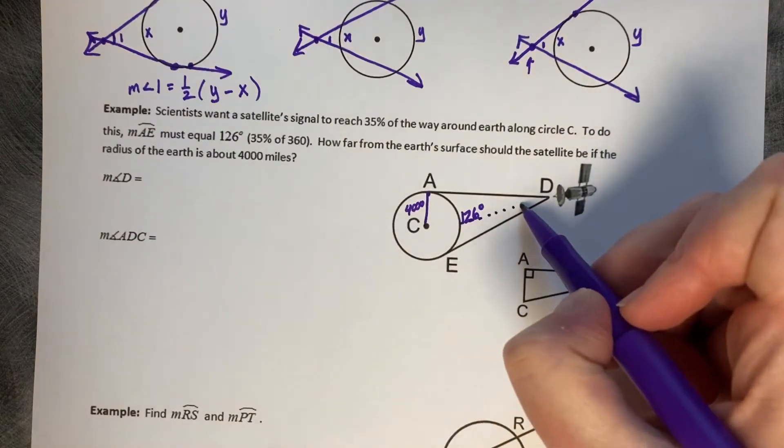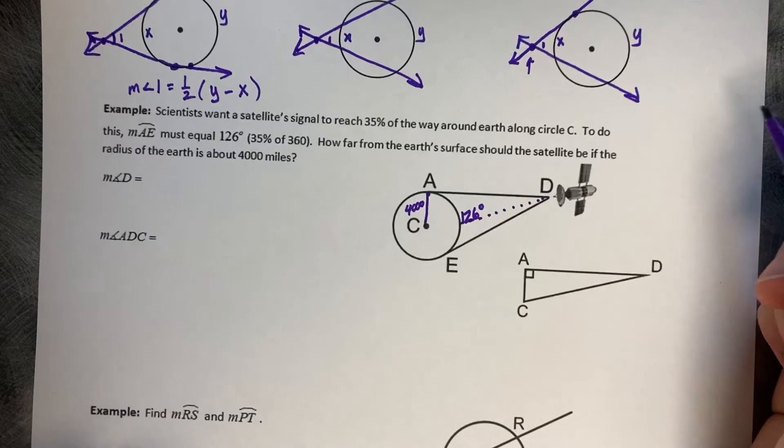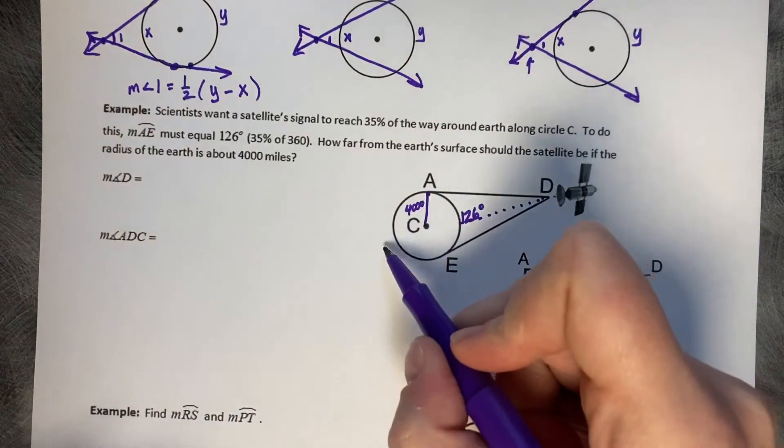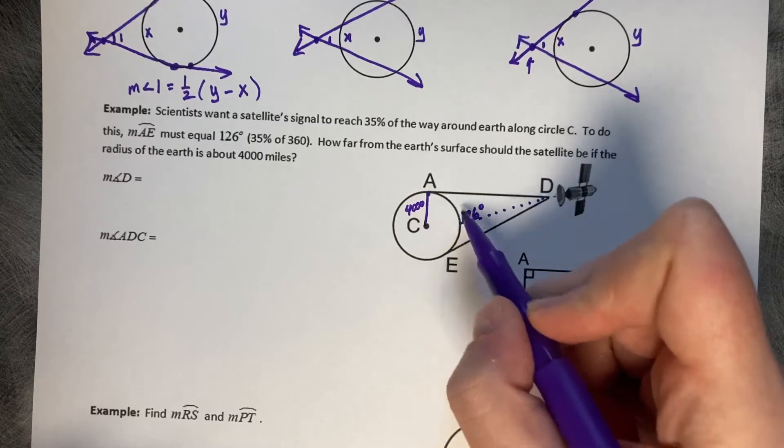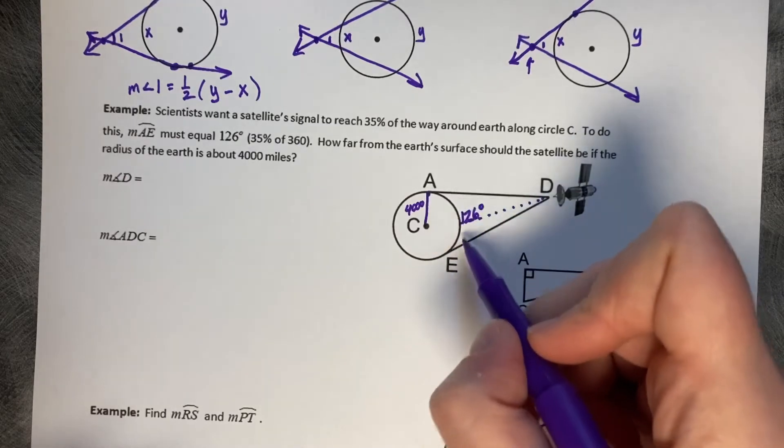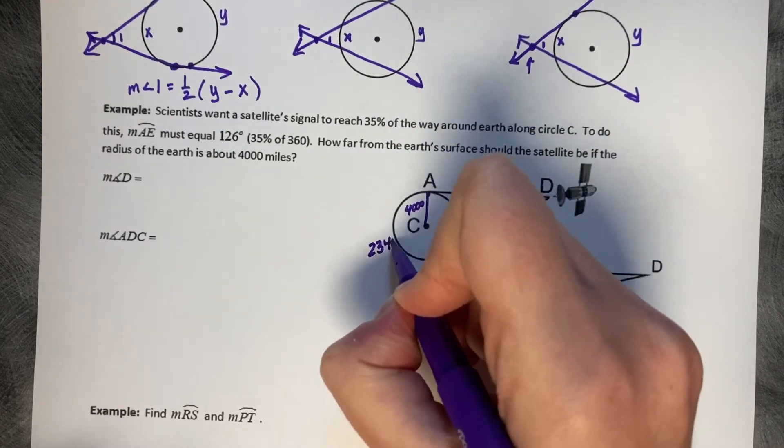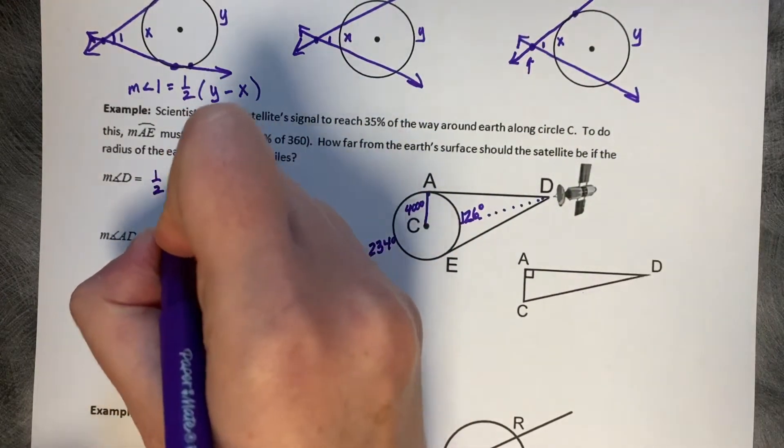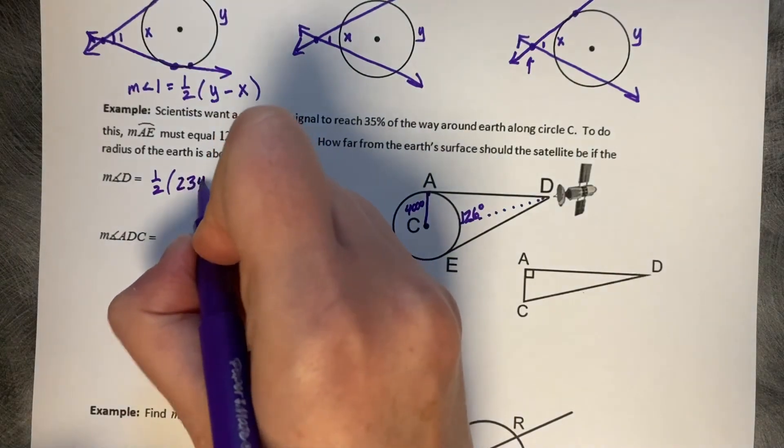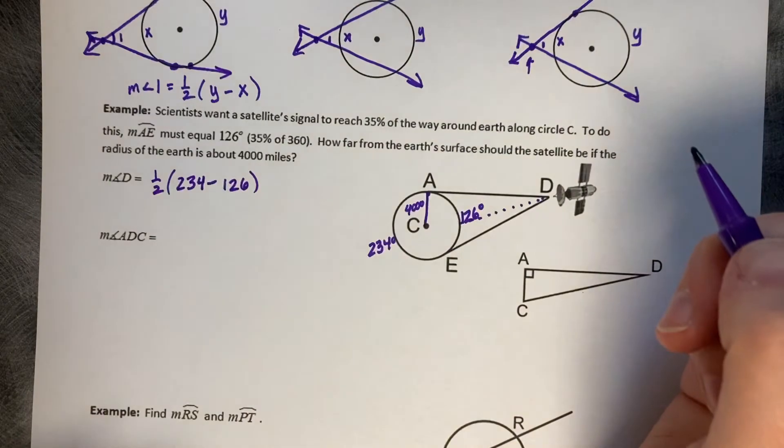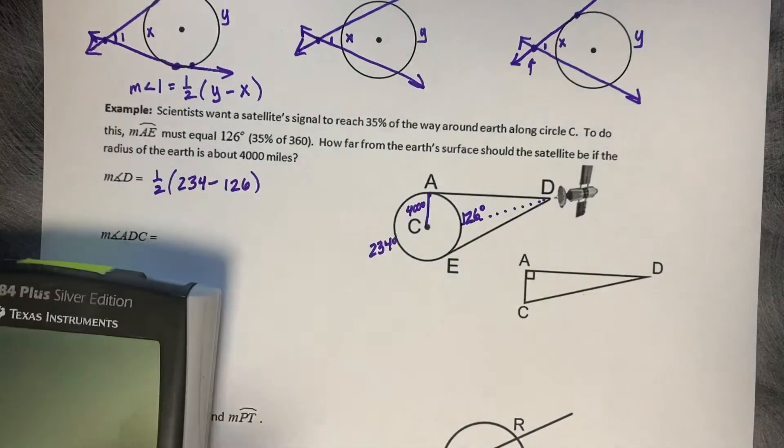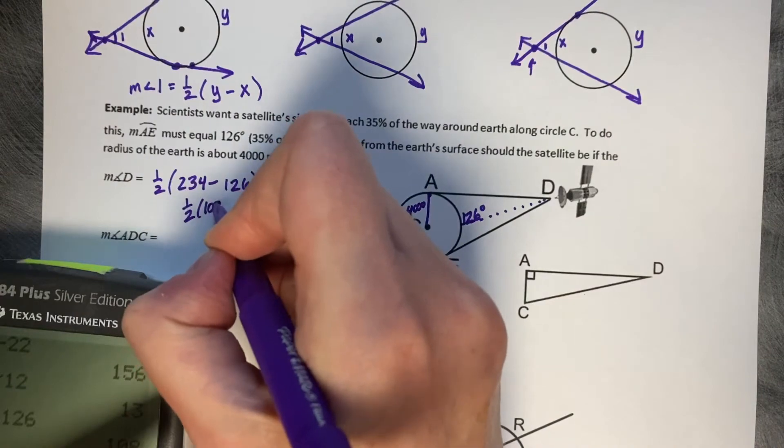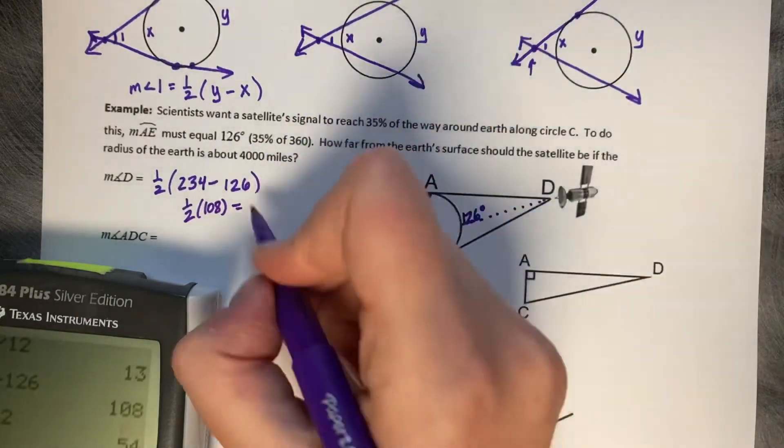So, this is the line we're looking at. First question is, what is the measure of angle D? Well, the measure of angle D is going to be half of the big arc minus the small. Well, all I know is the small right now, but I do know it's a chunk of 360 degrees. So, 360 minus 126 gives me 234 degrees all the way around the major arc from A to E. Then it's going to be one half of 234 minus 126, which is 108. So, half of 108, which is 54 degrees.